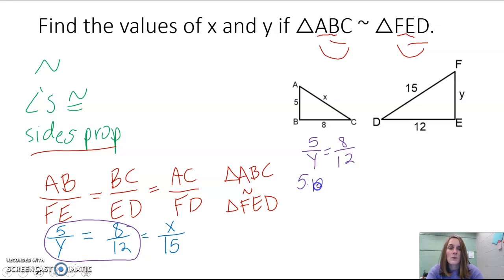We can take 5 times 12, and we can set it equal to 8 times Y. 5 times 12 is 60. 8 times Y is just 8Y. And then if we divide both sides by 8 to get Y by itself, 8 does not go into 60 evenly, but we do get 7.5 as our answer.